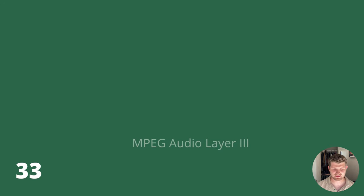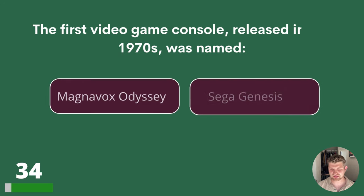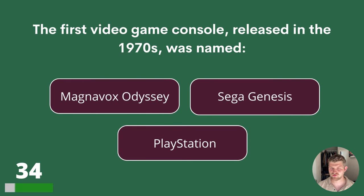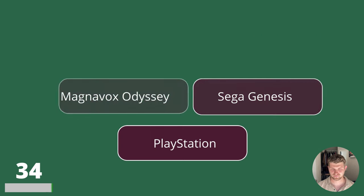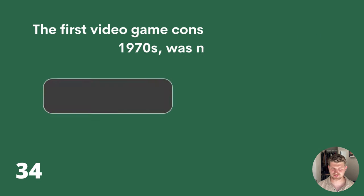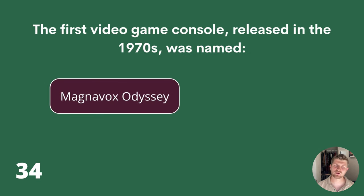Question 34. The first video game console released in the 1970s was named what? Magnavox Odyssey, Sega Genesis or PlayStation? The answer is Magnavox Odyssey.